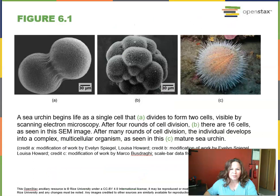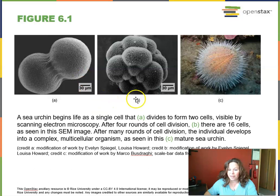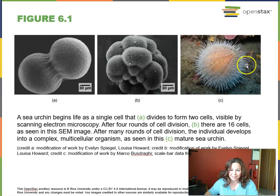Our textbook gives us some pictures to get us warmed up to the idea of cellular reproduction by looking at how a sea urchin begins its life as a single cell that divides into two and then divides more and more by a process called mitosis, as seen by scanning electron microscopy. And then in Picture C, we see how it has developed into a complex multicellular organism, the mature sea urchin.